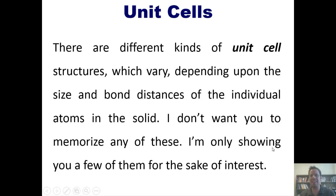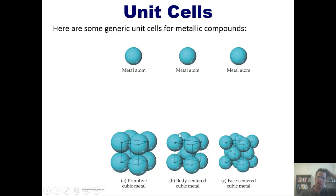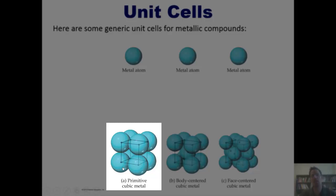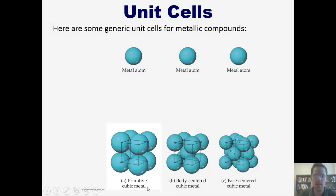Now, there are different kinds of unit cell structures which vary depending on the size and bond distances of the individual atoms in the solid. I do not want you, my students who take this course from me, to memorize any of these. I'm only showing you a few for the sake of interest. Here are some generic unit cells for metallic compounds.